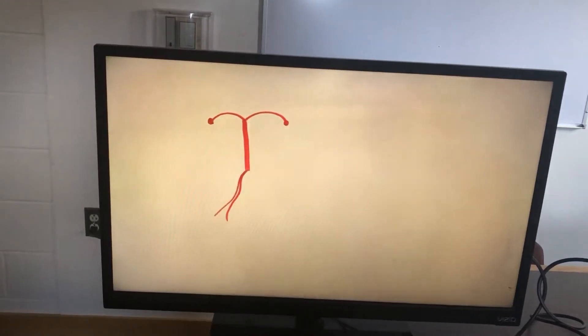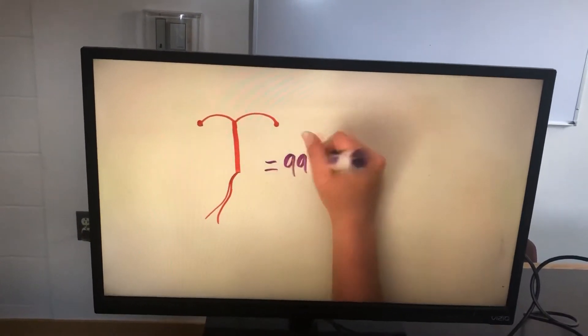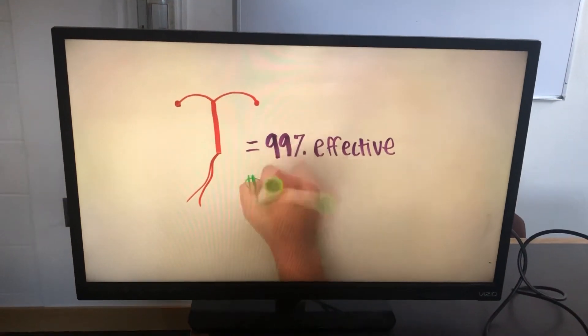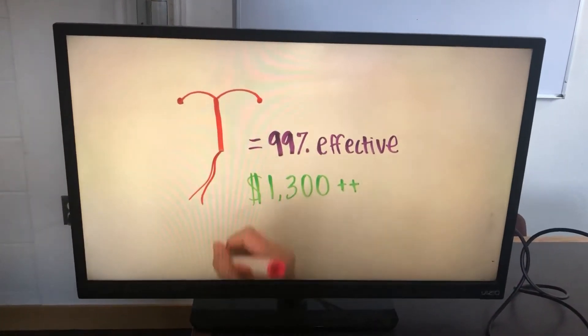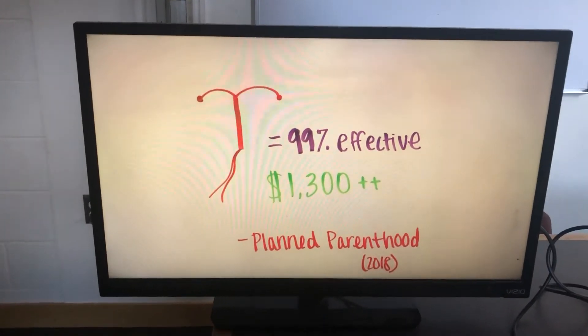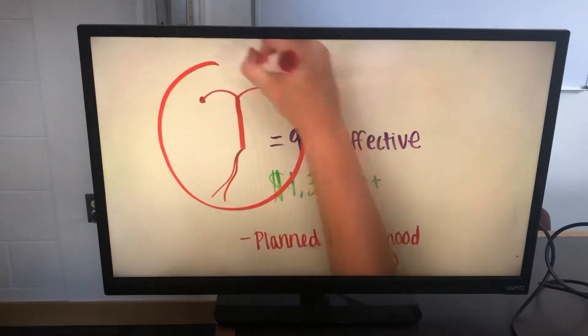According to Planned Parenthood's website, the IUD is 99% effective for preventing unplanned pregnancy, but can cost up to $1,300. Unfortunately for Mary, she cannot afford such an expensive implant and will not receive birth control covered by her employer.